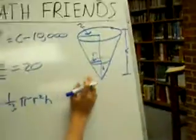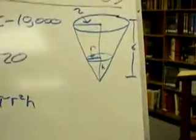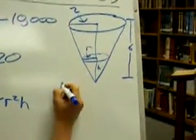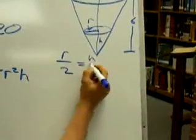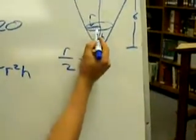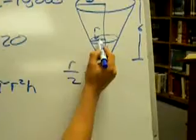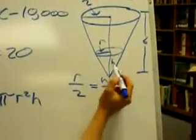If you look up here again at our diagram, you'll see that we have two similar triangles. So if I do r over 2 is equal to h over 6, the radius to the height over the height.